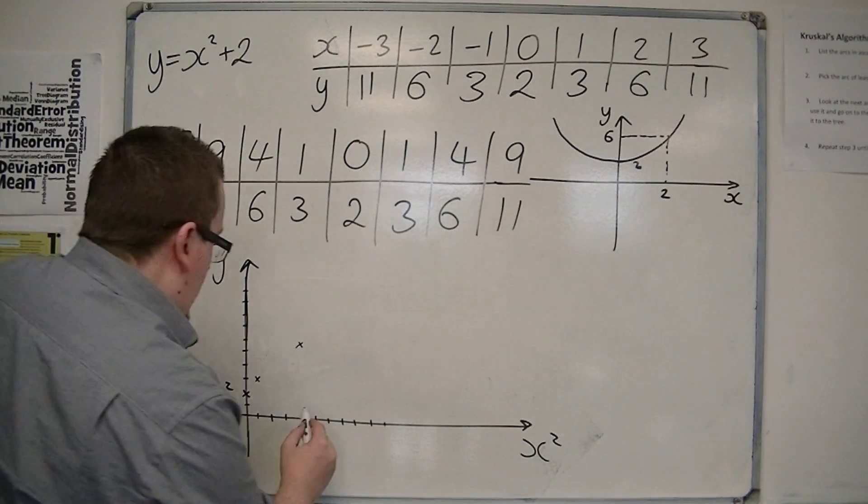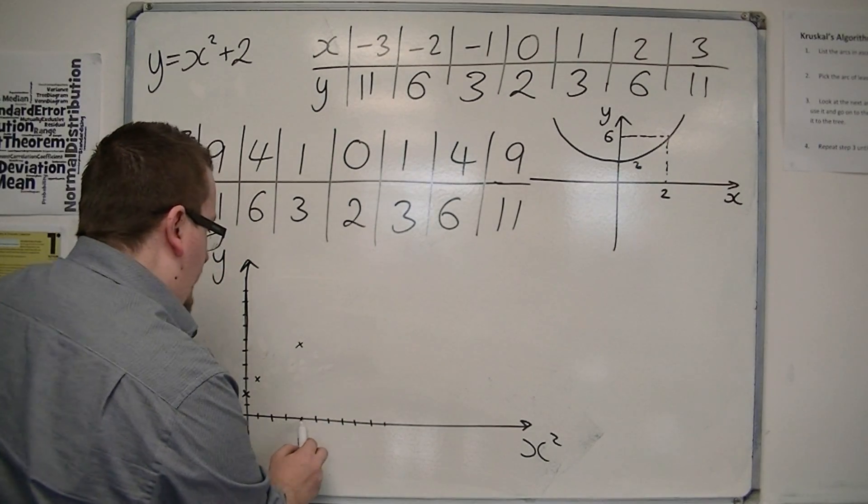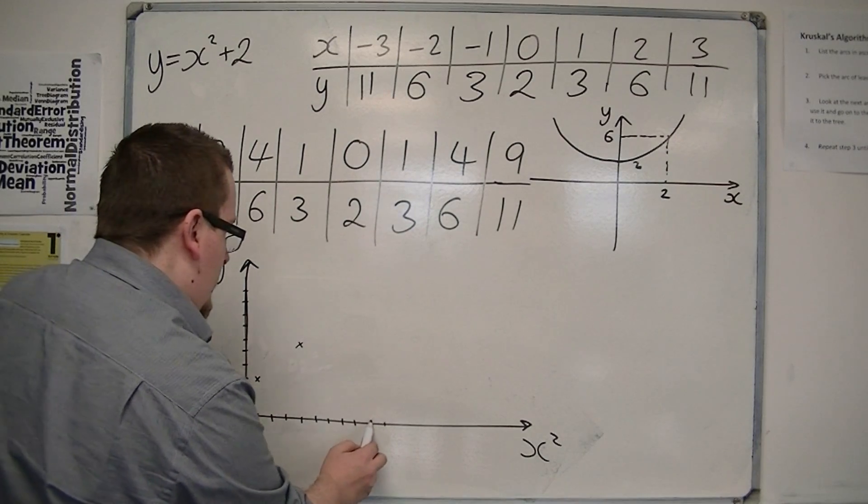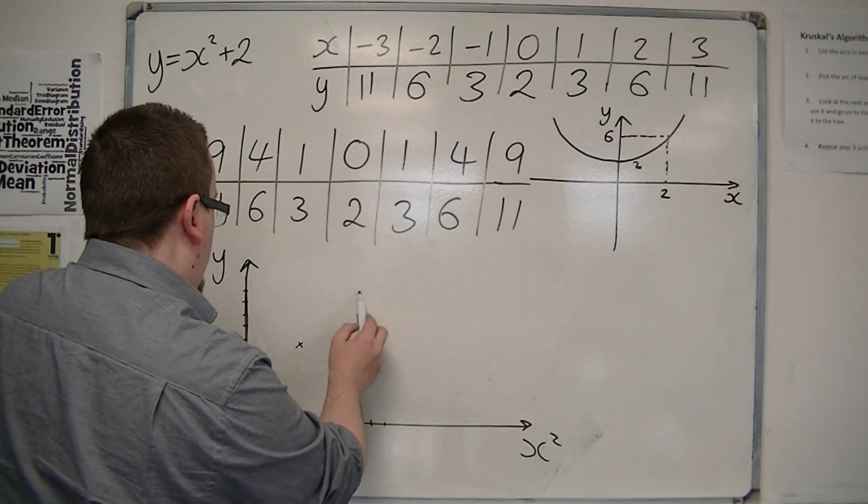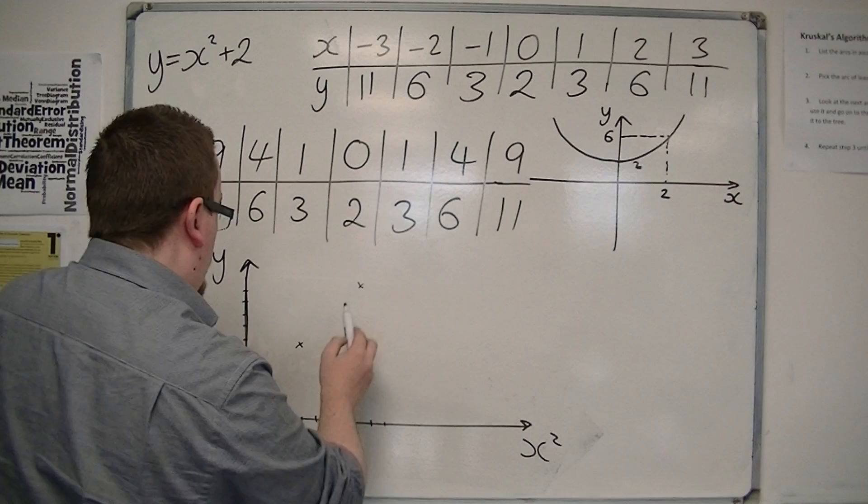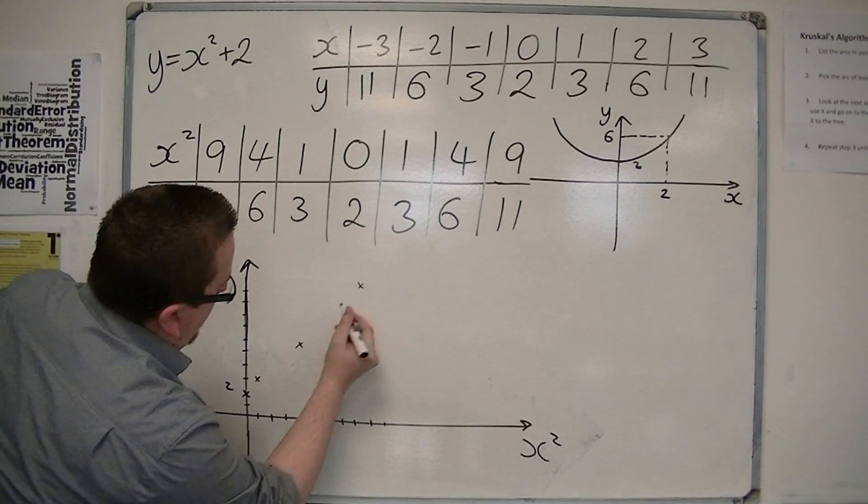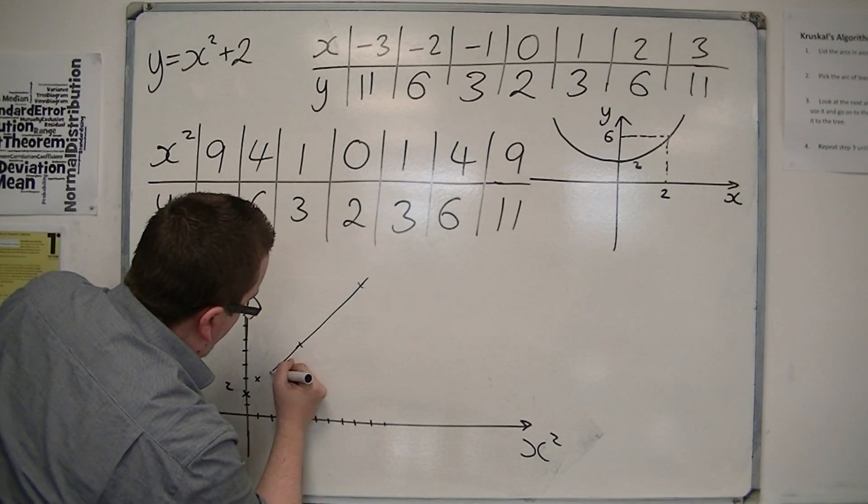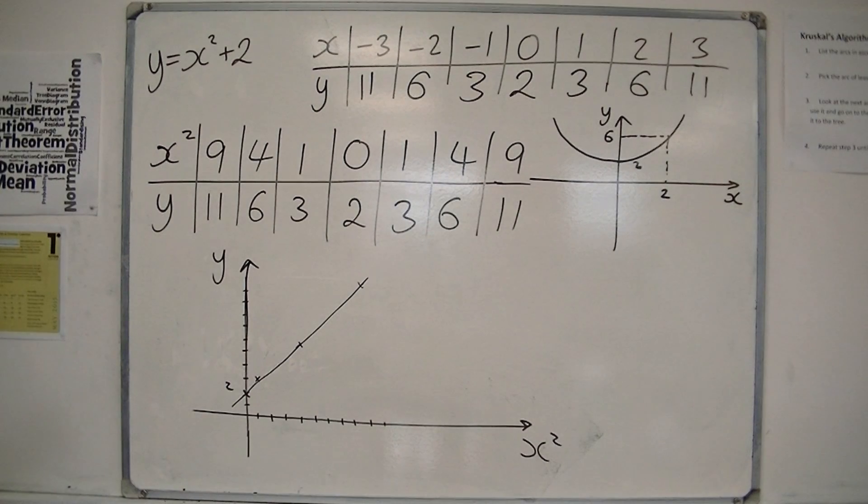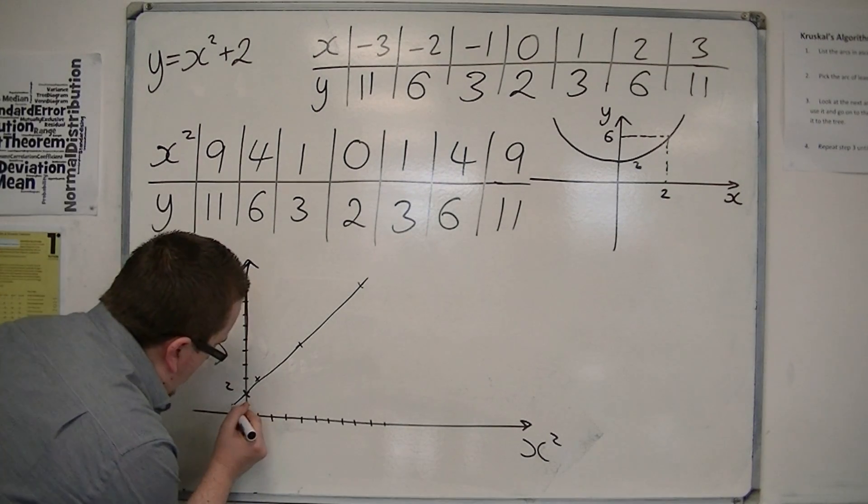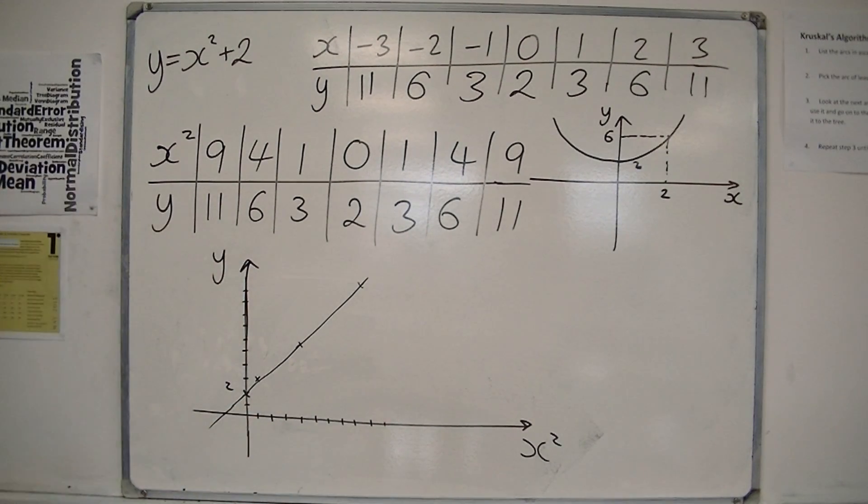And then I've got 9, 11. So 1, 2, 3, 4, 5, 6, 7, 8, 9, up to 10, a little bit more, so up to 11. And what you're going to start to see is the points roughly make a straight line, or should make a nice straight line.